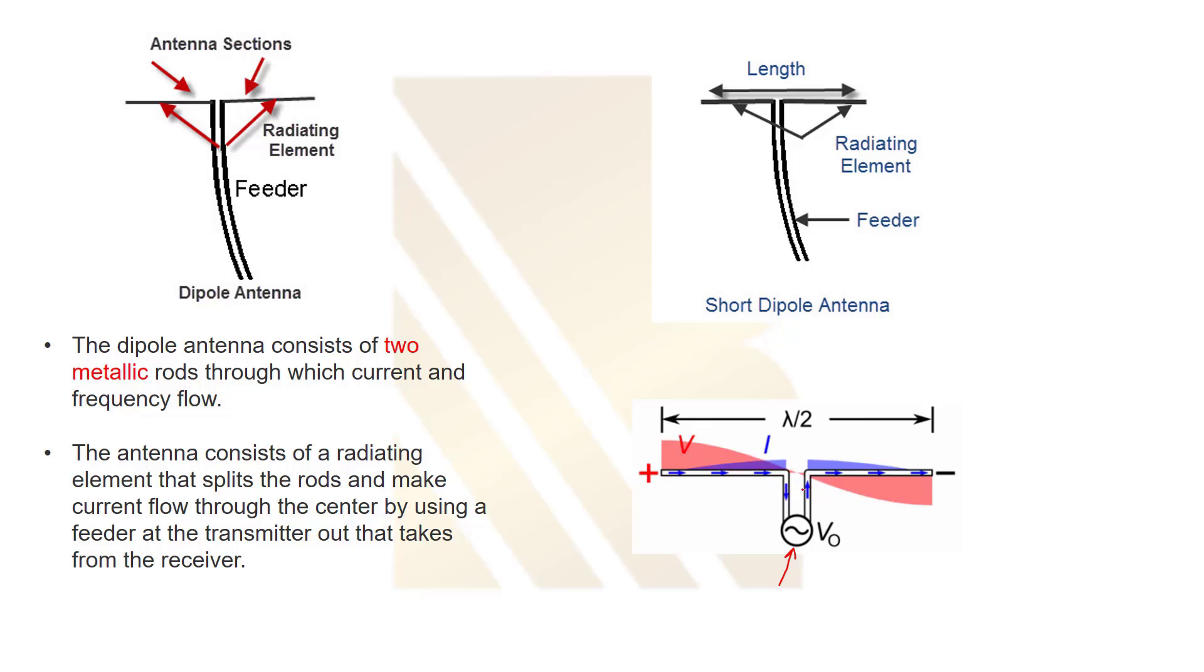You can notice here this voltage is changing because it's AC voltage, and this shows the current flow. When voltage gets positive, current flow changes; when it gets negative and positive. So basically this is what happens inside the antenna.